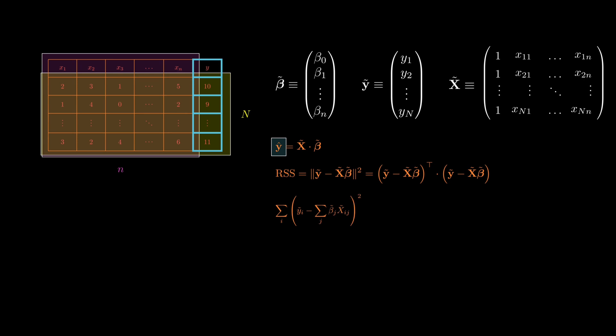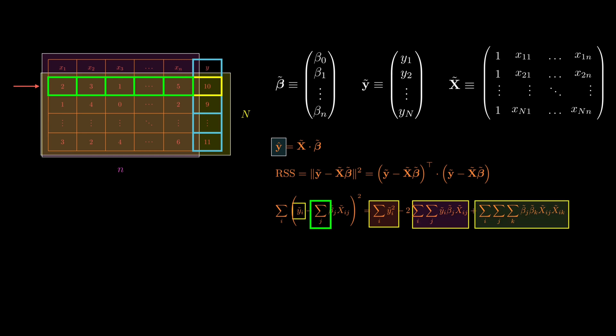To be more explicit, in index notation, this becomes a sum over all observations. For each one, we take the difference between the actual Y-value and the predicted value, computed as a sum over features, and then square it. Expanding this expression gives us three terms. One involving the squares of the Y-values, one involving the product of Y and X, and one involving products of X with itself and beta coefficients.